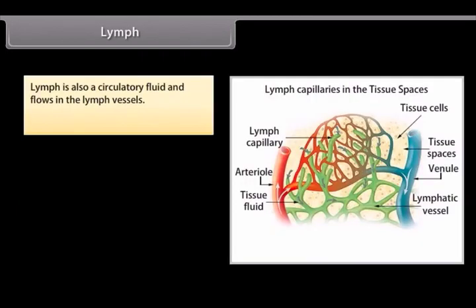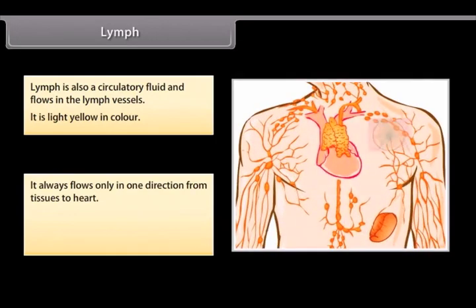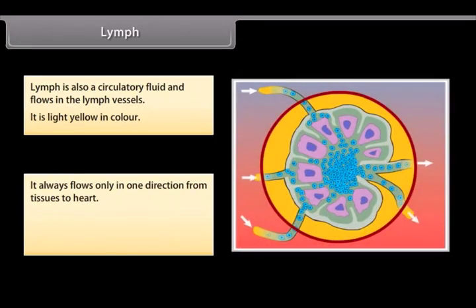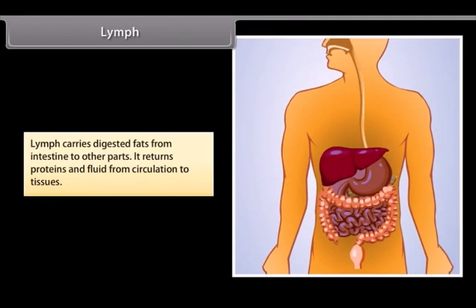Lymph. Lymph is also a circulatory fluid and flows in the lymph vessels. It is light yellow in color. It always flows only in one direction from tissues to heart. Cells called lymphocytes present in lymph eat up germs and prevent body from infections. Lymph carries digested fats from intestine to other parts. It returns proteins and fluid from circulation to tissues.